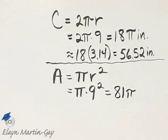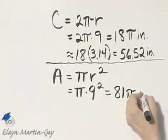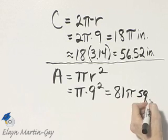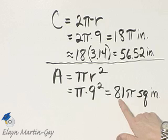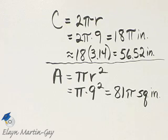This is area enclosed by the region, so this is square inches. The area of the circle is exactly 81 pi square inches.